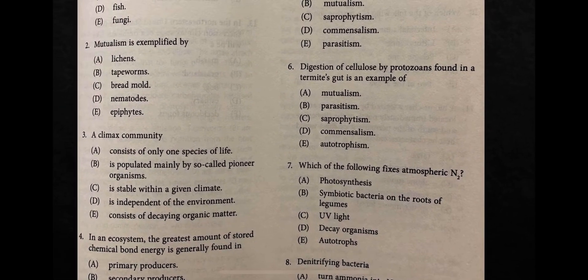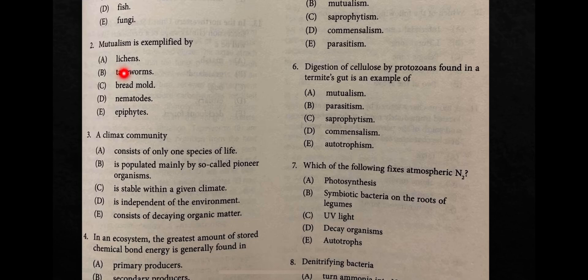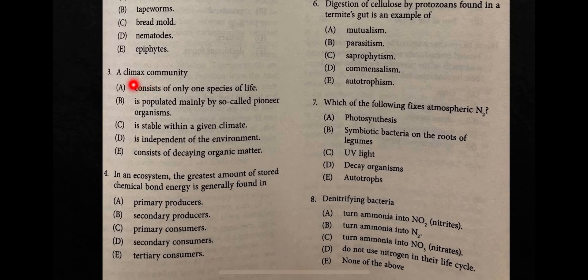Question number two: mutualism is exemplified by which of the following? The answer is lichens. Lichens represent a mutualistic relationship between a photosynthetic organism — like algae or photosynthetic bacteria — and fungi. Lichens are also pioneer species with the ability to start primary succession.